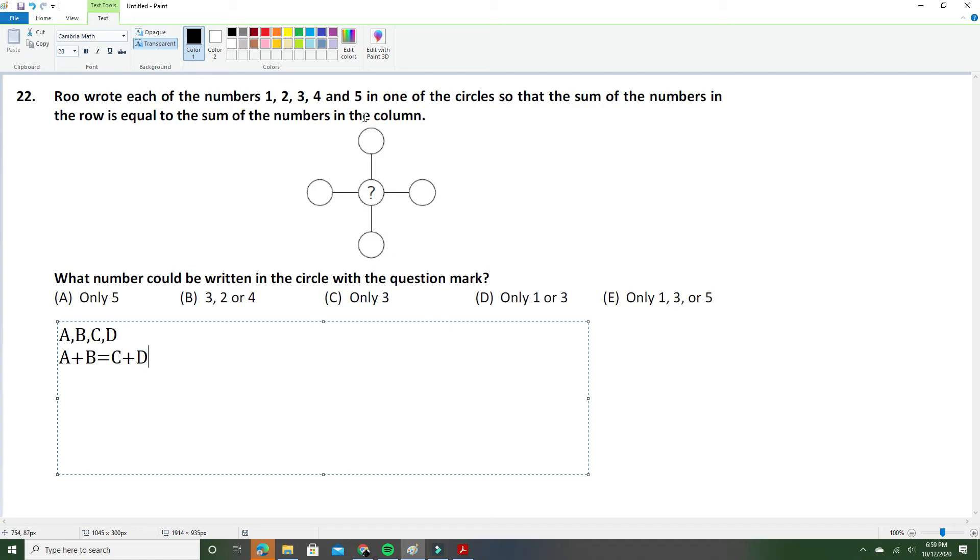It has to be even because the sum of the circles will be even since it has to be divided into two to equal these two equal numbers, which is A + B = C + D, meaning that A + B + C + D is equal to an even number.